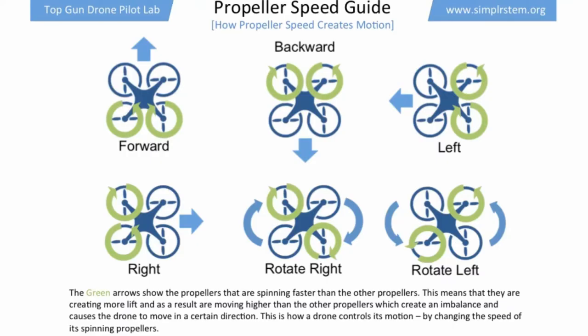Looking back at the propeller speed guide: if we wanted to go backwards, the two front propellers spin faster, and as you can see from the picture, the drone goes backwards. If we want to go left, the two right propellers spin faster. If we want to go right, the two left propellers spin faster.